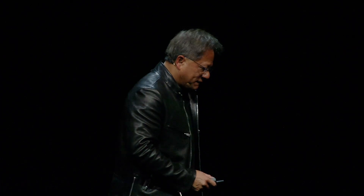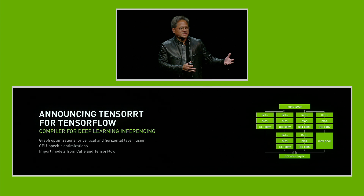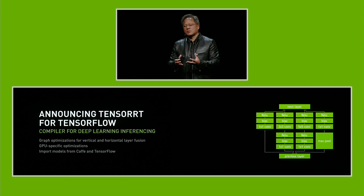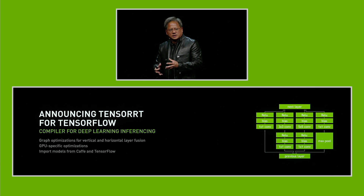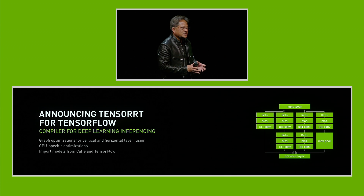Let me talk about inferencing. Now we've created this network, and it's taken hours and hours of deep learning training on DGX1 or in the Amazon cloud or in the Azure cloud with all these GPUs. Now that you have this network, it's ready to be deployed, and that network is still very computationally intensive. We need to figure out a way to make that network run as fast as possible.